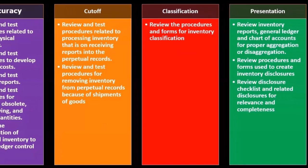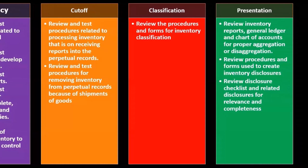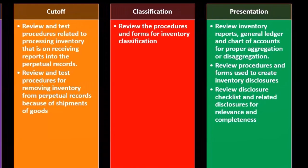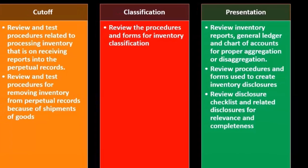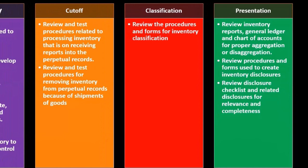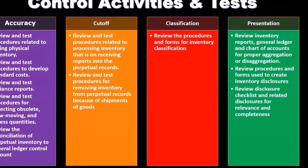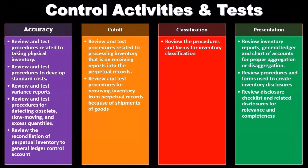Then we have the assertion of classification — review the procedures and forms for inventory classification. For presentation, review inventory reports, the general ledger, and chart of accounts for proper aggregation and disaggregation. We'll review procedures and forms used to create inventory disclosures, and review the disclosure checklist and related disclosures for completeness. Note that some of these controls overlap with other processes we've tested — particularly the purchasing process, the sales process, and to some degree human resources and payroll.